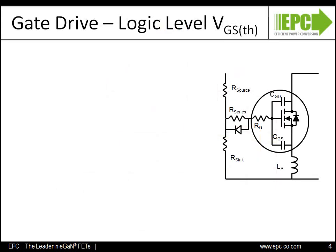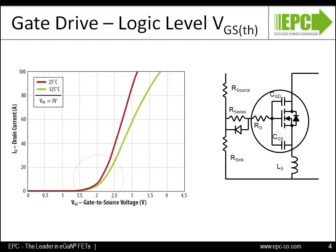Here we can see an equivalent circuit of the eGAN-FET and a driver showing the series gate resistor and anti-parallel diode typical to MOSFET driver circuits, as well as the gate driver pull-up and pull-down resistances. We can see that the plateau voltage for reasonable currents is right in the middle of the drive voltage at approximately two to two and a half volts, allowing both the turn-on drive voltage and turn-off drive voltage to be somewhat symmetrical.